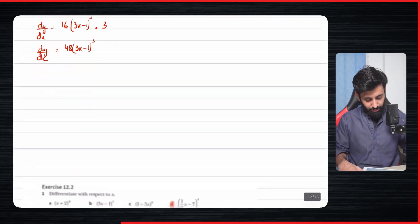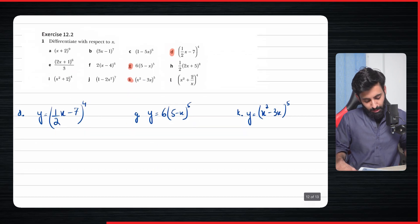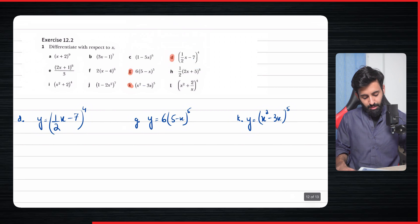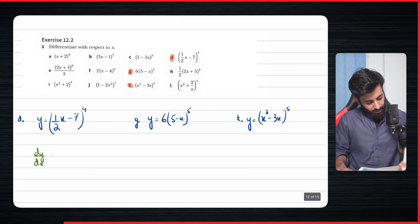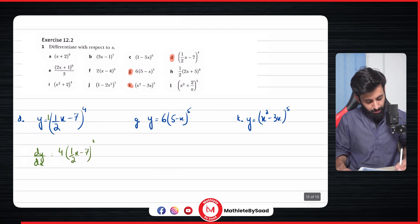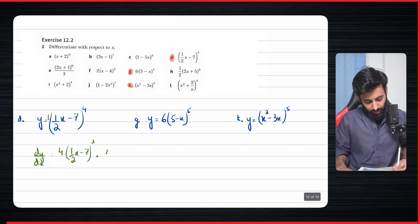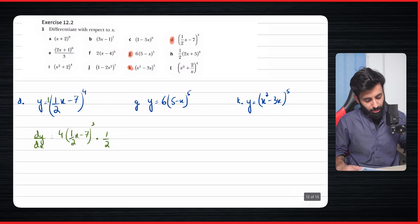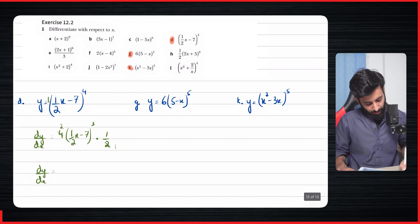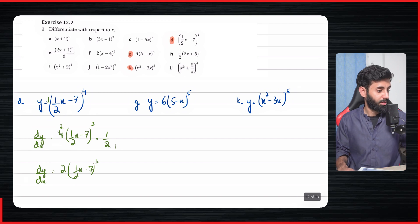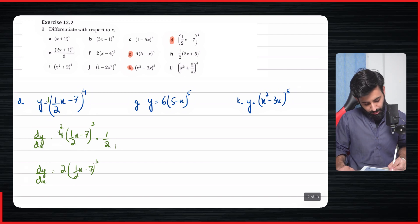Now we'll do three examples from your book, Exercise 12.2. For the first one, dy/dx: 4 gets multiplied by 1, giving 4(½x − 7), the power reduces by one so 4 − 1 = 3, and then multiply by the differential inside the bracket which is ½. Simplifying, dy/dx = 2(½x − 7)³.